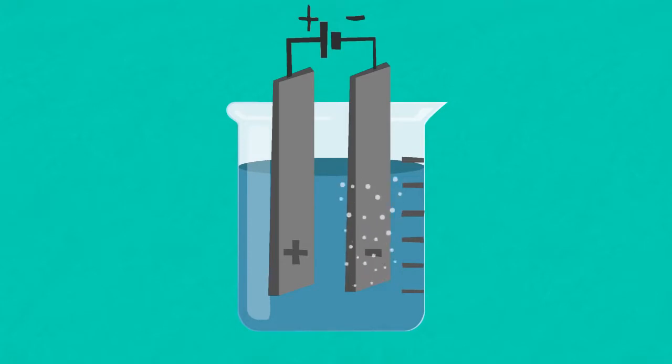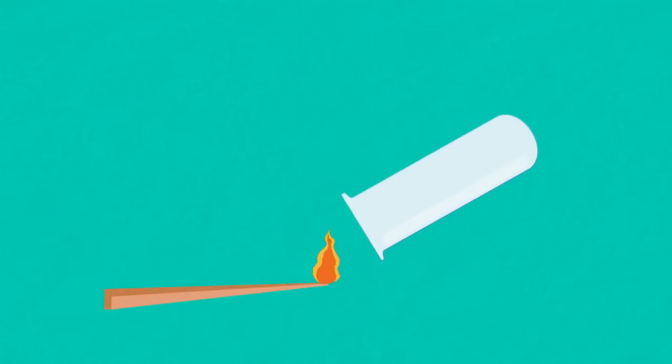The gas here is colorless and can be collected in a test tube. The test to prove that it is hydrogen is done with a burning wooden splint, and you'll hear a familiar pop as the hydrogen burns.